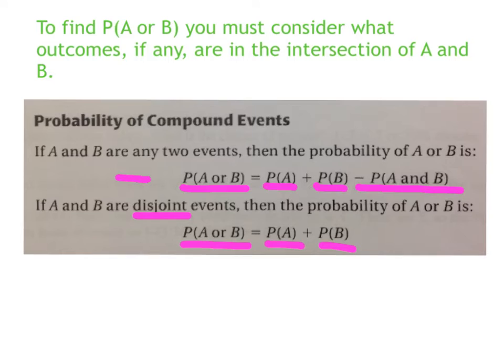So when we do our probability of compound events, if A and B are any two events, the probability of A or B is the probability of A plus the probability of B, and then minus the probability of the ones that are in both, because we've counted them twice. So we have to subtract that to make up for being counted twice. If they are disjoint events or mutually exclusive, then there is no P of A and B, and it's just P A plus P B. So really, if you just know this first one and then you come across an event that's mutually exclusive, and so your P A and B would be zero, you can just get away with knowing the first equation and subtract zero.